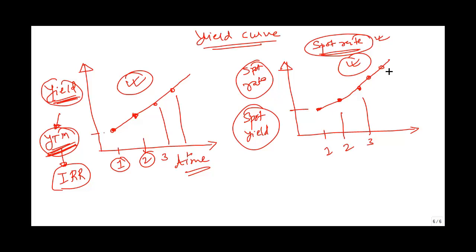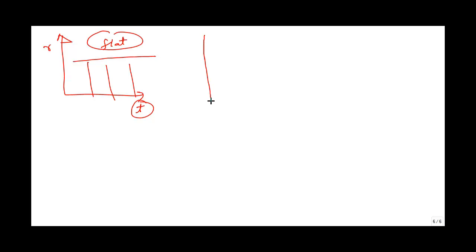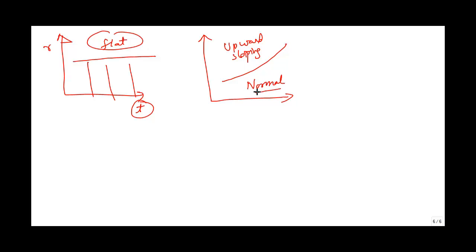With respect to time, the yield curve is increasing — that is what you will mostly see. However, the shape of the yield curve can be many. One is an upward sloping yield curve, and this is what you will see normally, which is why it is also called the normal yield curve.